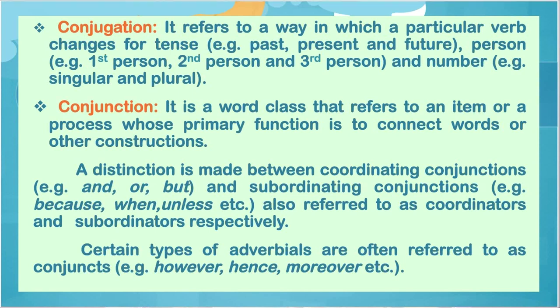Conjugation — it refers to the way in which a particular verb changes tense, for example past, present and future; person, for example first person, second person and third person; and number, for example singular and plural.